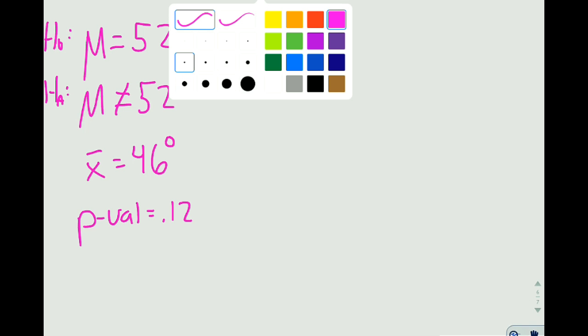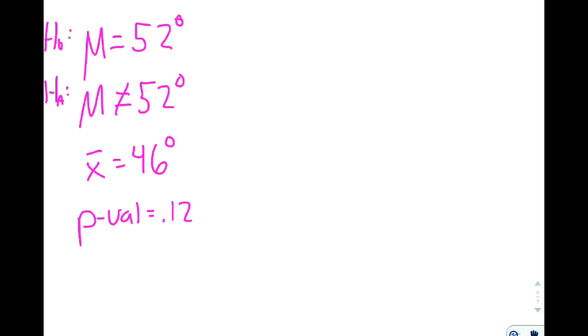I want to turn this into a sentence. I'm going to always start with my p-value itself. So, there is a 12% chance of something happening. A 0.12 probability of, so I've got my p-value used up.